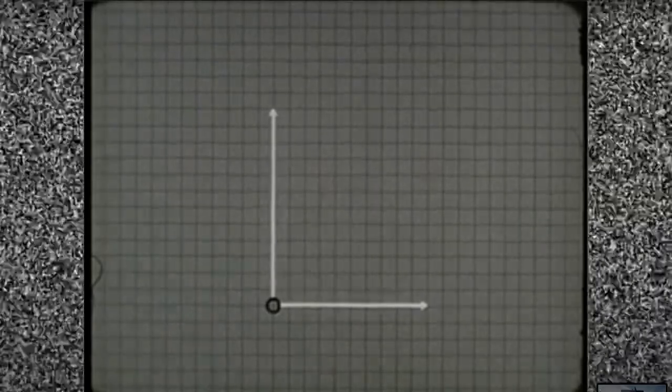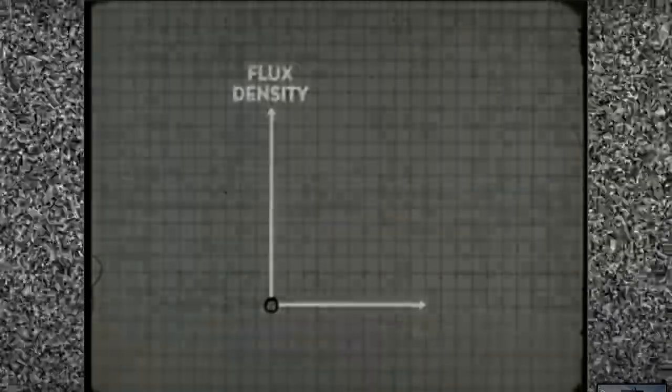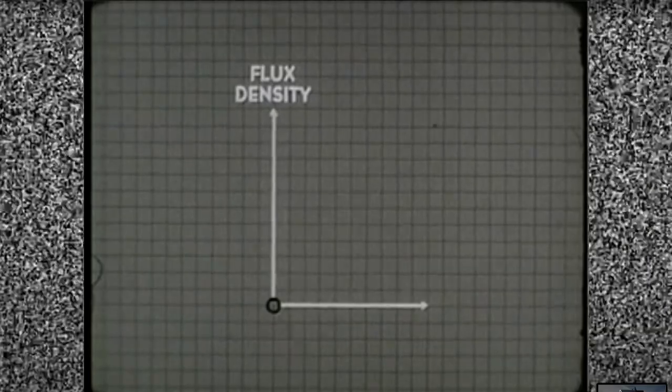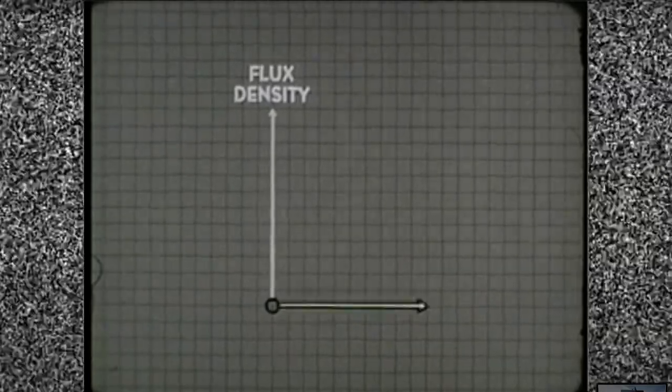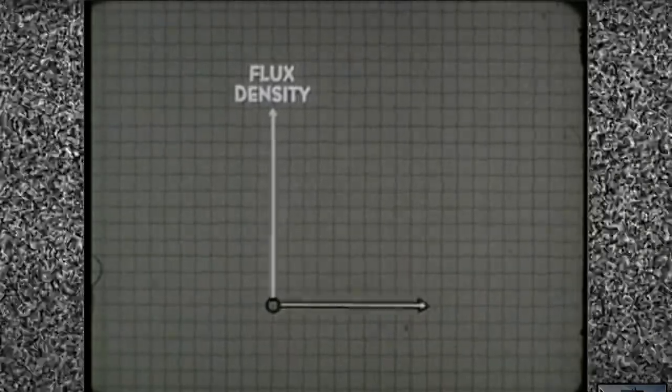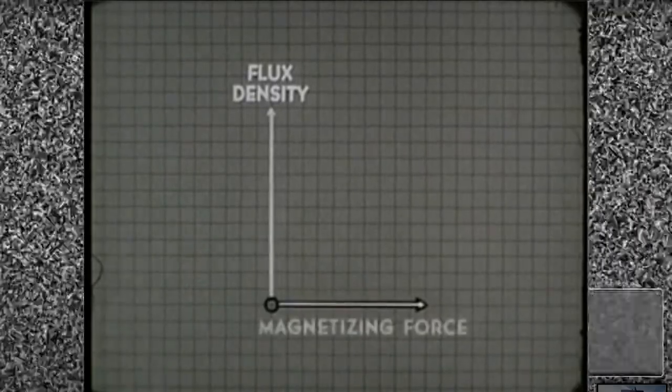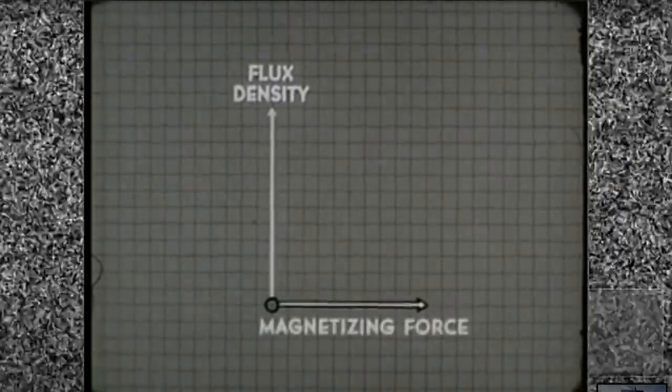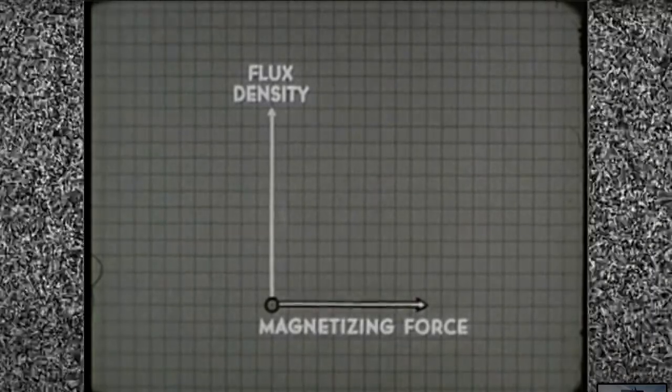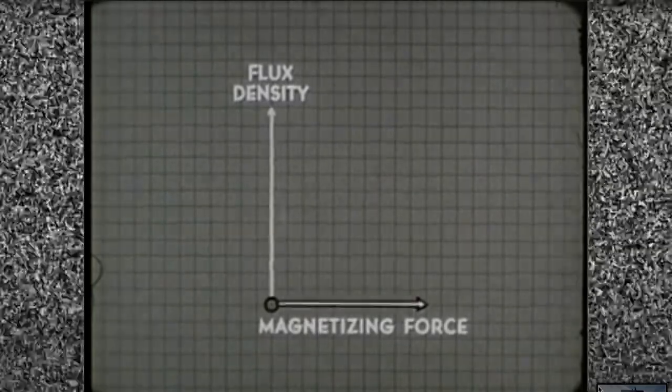We measure the magnetism of the core in terms of its flux density, which is the number of magnetic lines of force per square inch. The horizontal axis will represent the magnetizing force of the winding. Remember that the magnetizing force is the cause and the flux density is the effect.